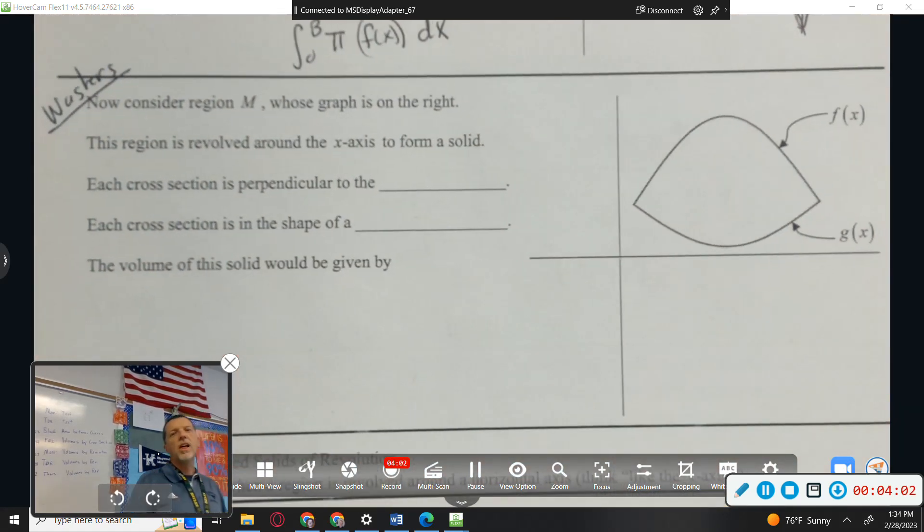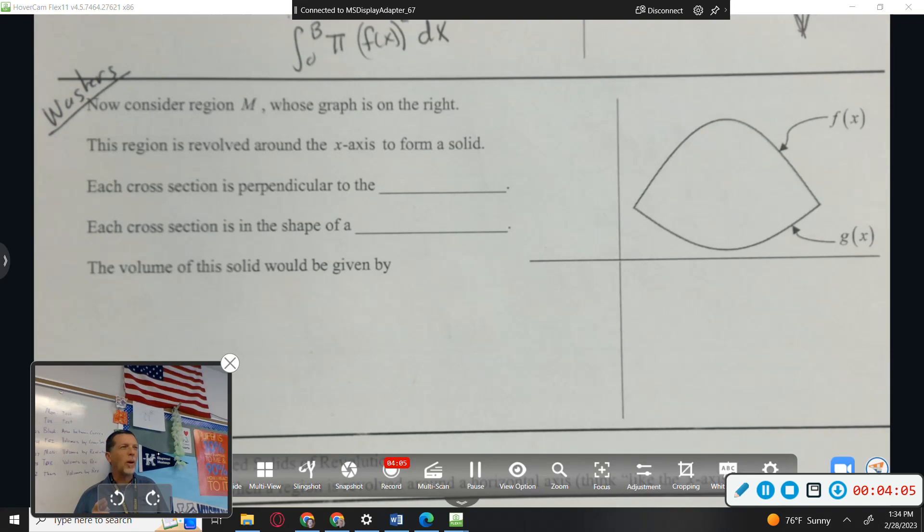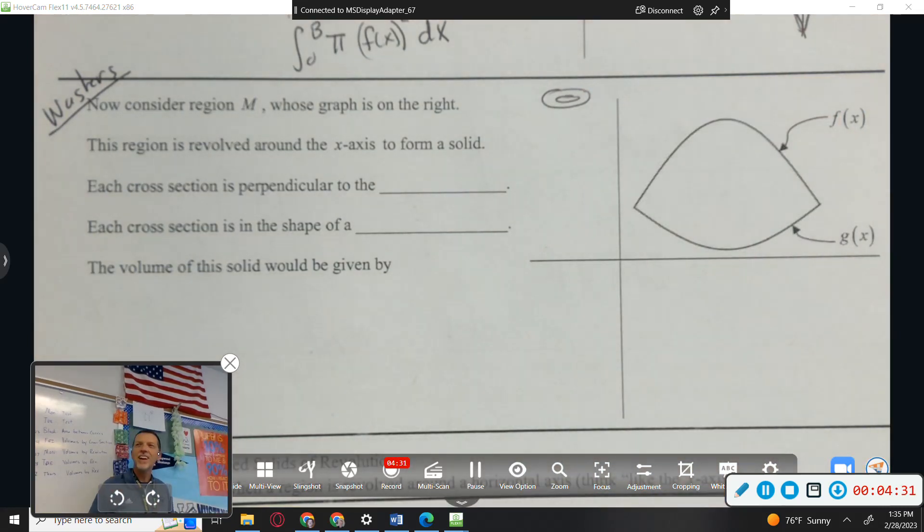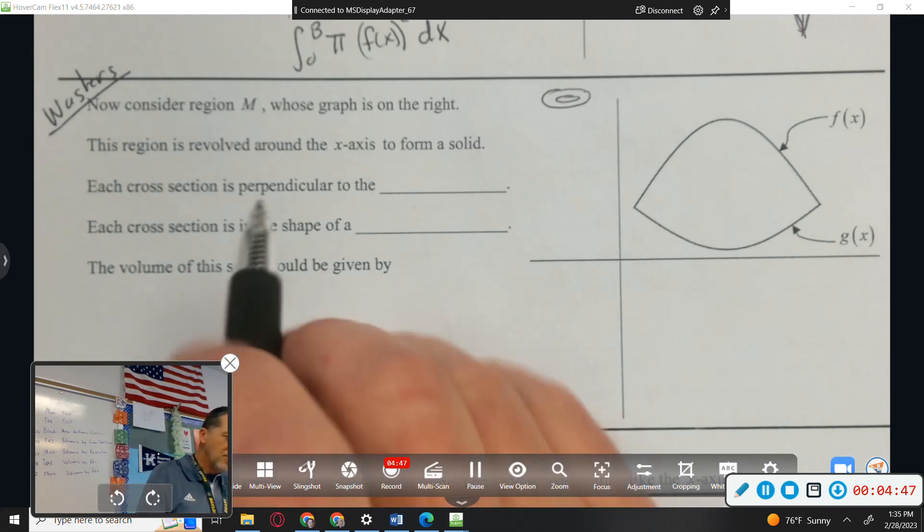Disk and washers. The next one's going to be washers. So washers are the thing that look like that - they have a hole in them. They go on screws before they go into the wall so the screw doesn't go into the wall. There's probably a hundred of them in this room right now holding stuff together.